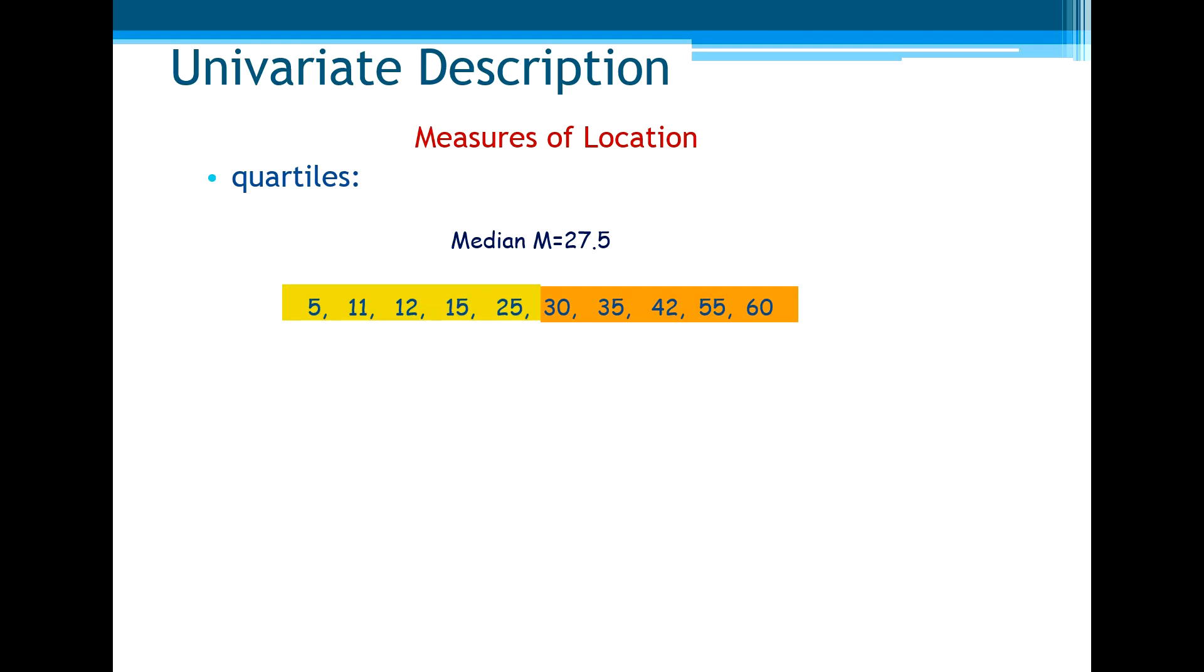Now, the quartiles are the three points that divide the data set in four equal groups, each group comprising a quarter of the data.